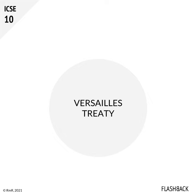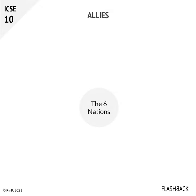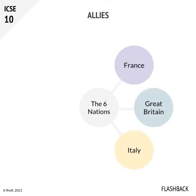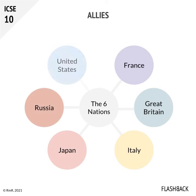Versailles Treaty. The Allies were a group of six nations. They were France, Great Britain, Italy, Japan, Russia, and later joined by the United States of America.